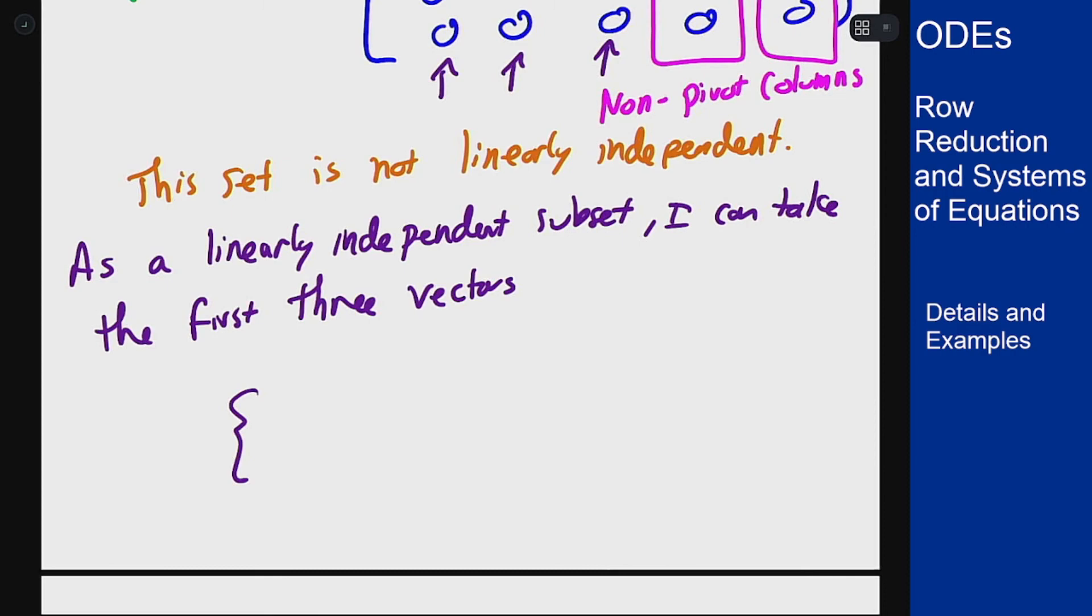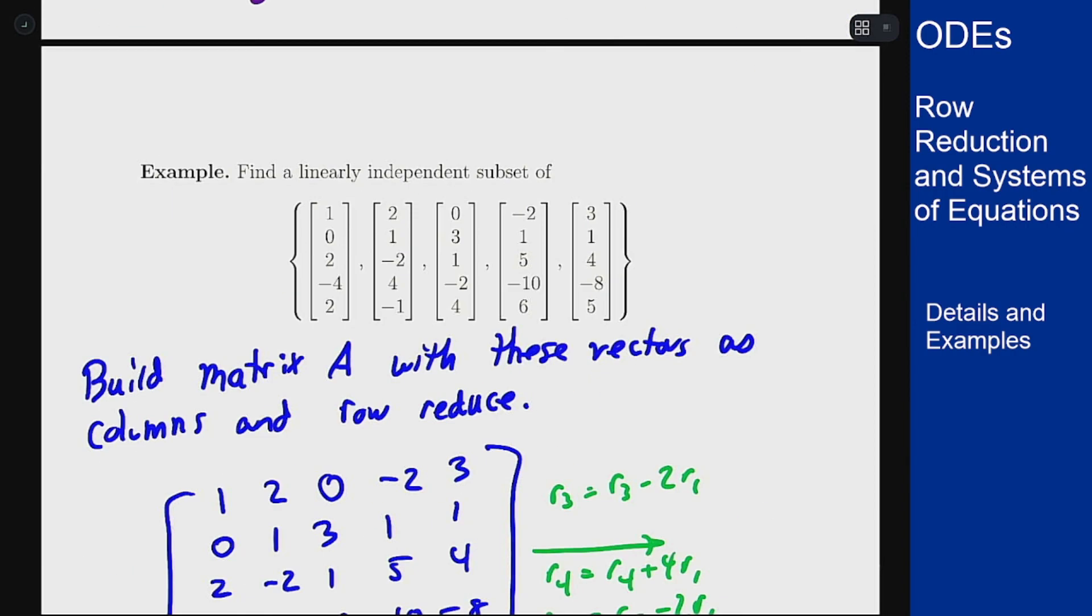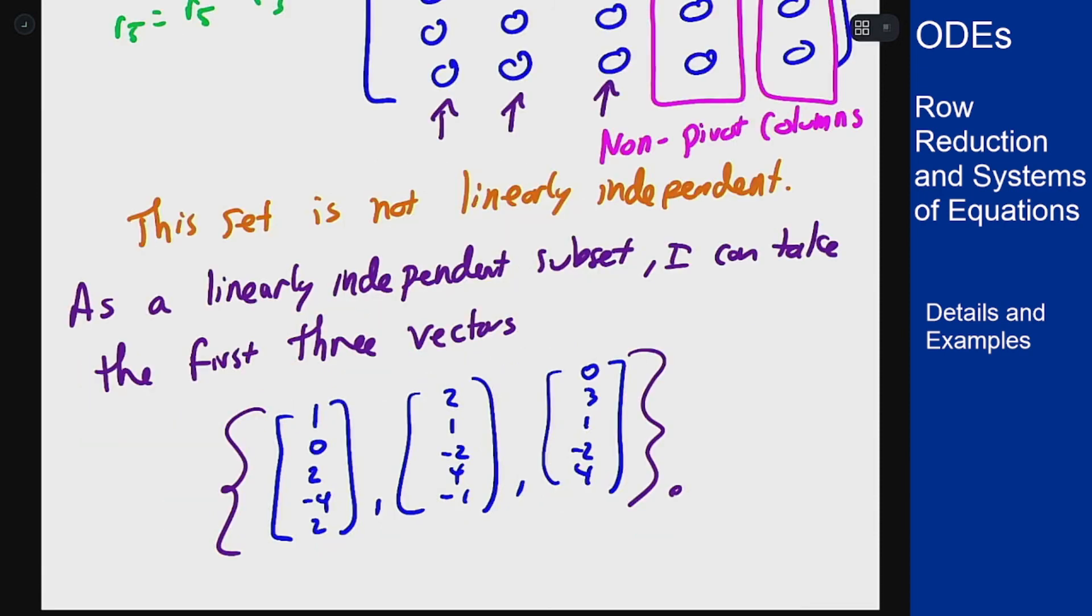Namely, if I go back to the actual problem statement, it's these first three vectors here. I can take those as a linearly independent subset. That would be an answer here for this problem.